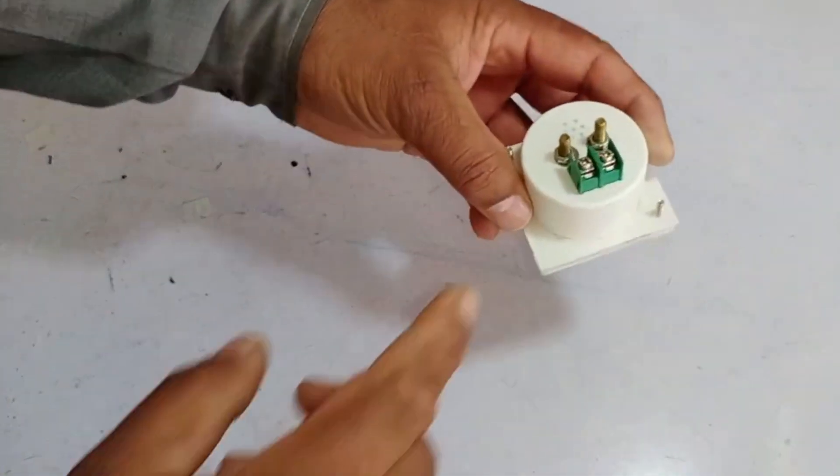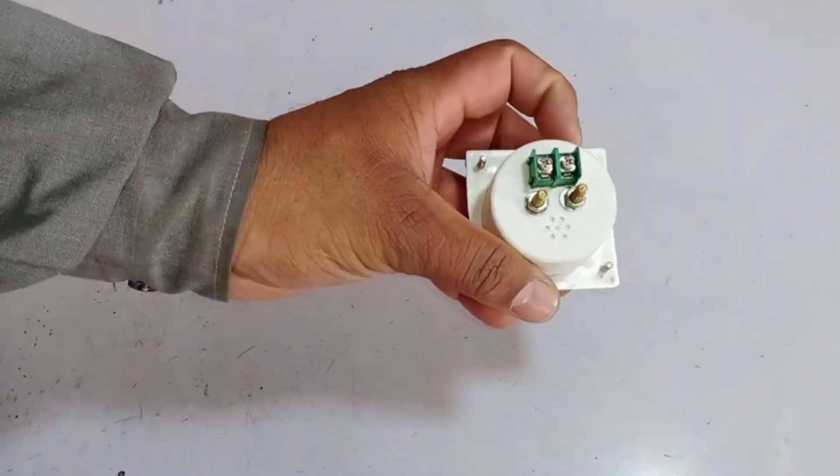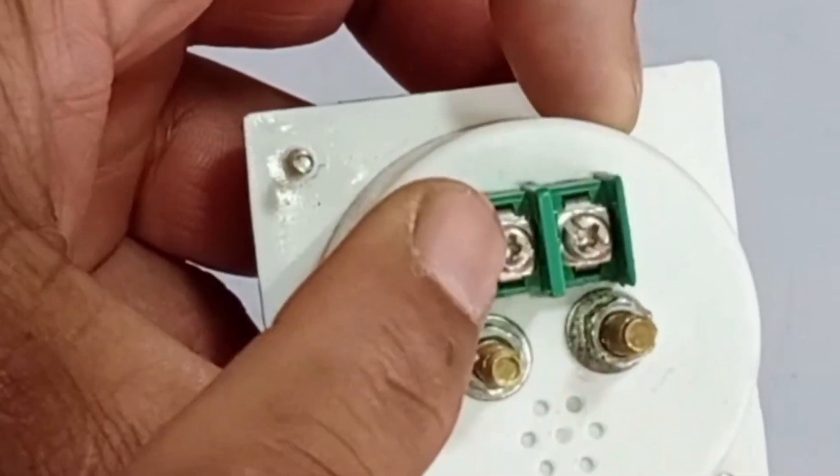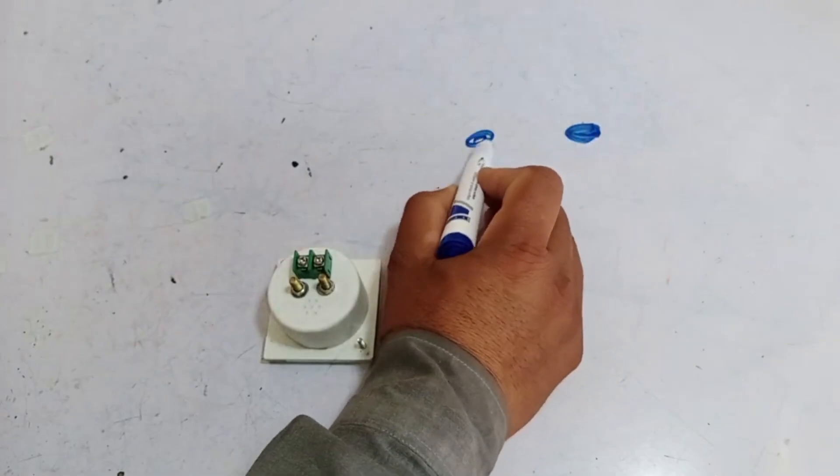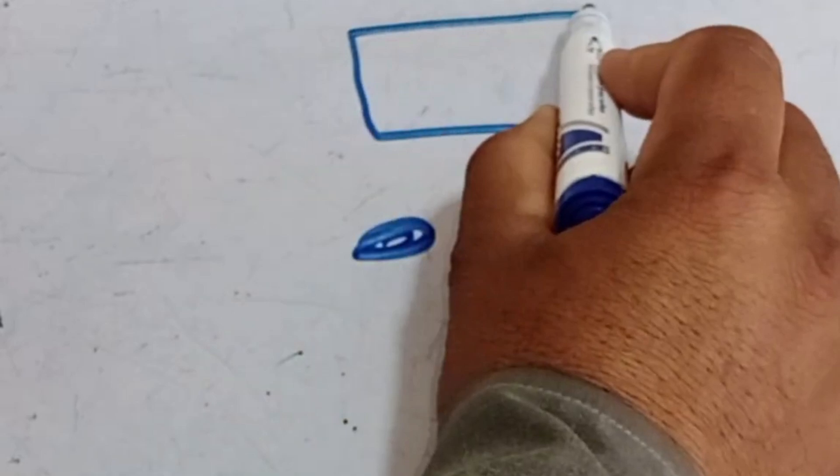First of all, let me explain how to make the connections for this panel meter. There are two terminals at the bottom and two terminals at the top. I'll show you how to connect them properly. First, the bottom terminals are set up and then the top terminals are configured.